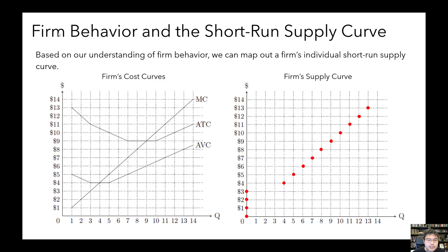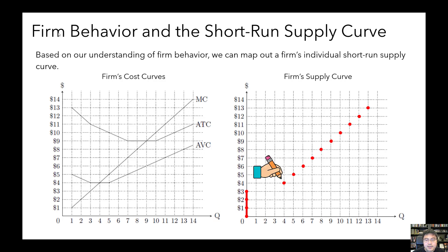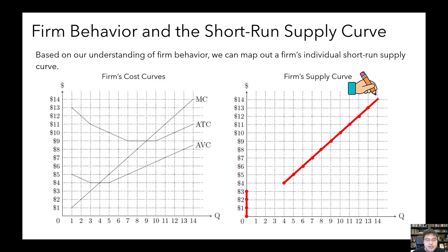So this shows you that a firm's individual supply curve is indeed the same as its marginal cost curve, as long as marginal cost is above the average variable cost. But there is a price below which the quantity supplied just turns to zero.